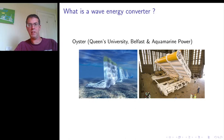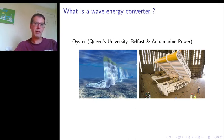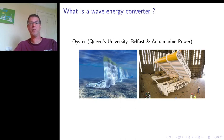On the right you can see one of these devices after it had been manufactured on the dockside in Belfast. You can see the scale compared to a human — they're about 20 meters in height and about 26 meters in length. The way it operates is fairly intuitive: as waves come in, the flap moves backwards and forwards in response to the wave, driving a piston attached to the bottom, which drives hydraulic fluid around a loop to a pumping station where electricity is generated.